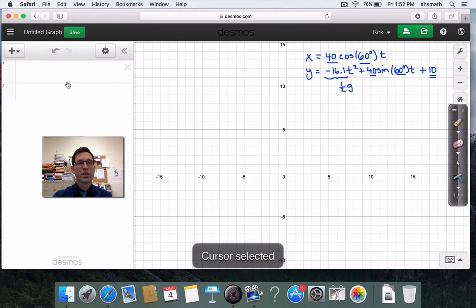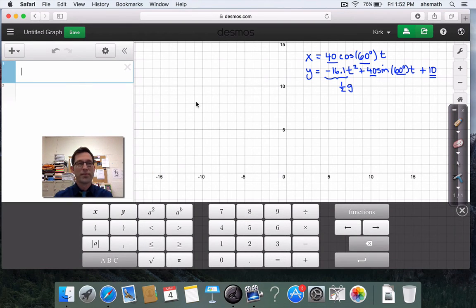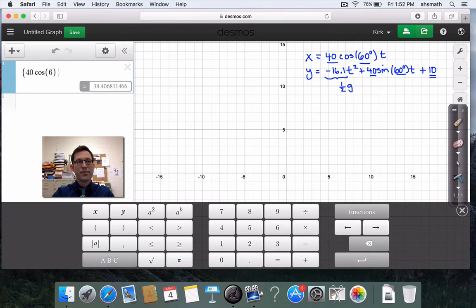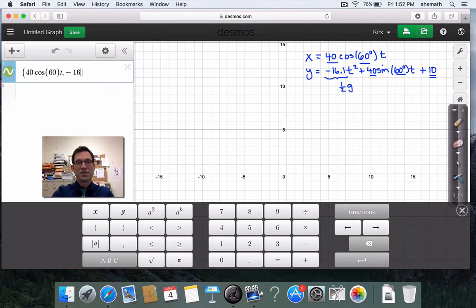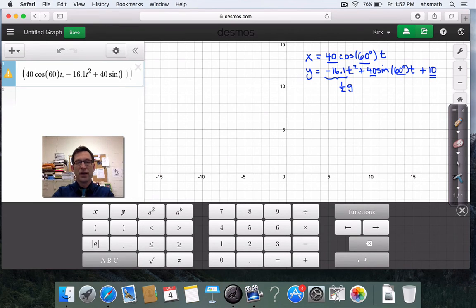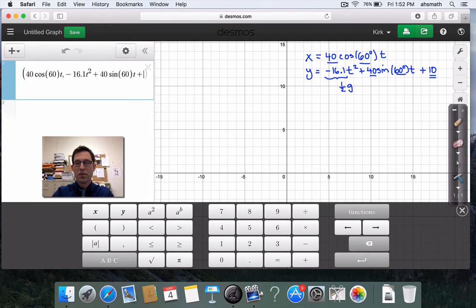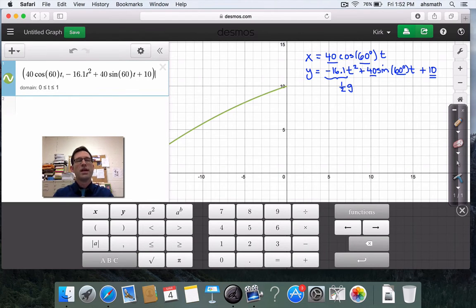And this was a projectile that was fired at an initial angle of 60 degrees with an initial velocity of 40 feet per second and an initial y height of 10 feet. This is just one-half of the acceleration due to gravity in the English system. Anyway, let's do this thing.